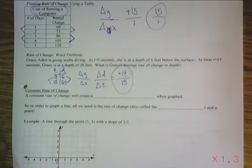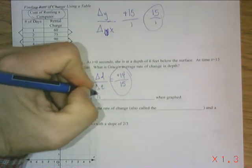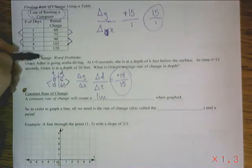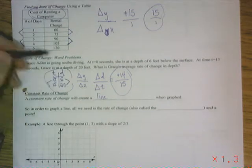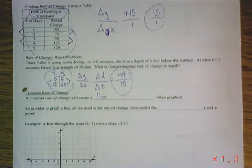Last one on this. A constant rate of change will create a line when it's graphed. So if we were to graph these points right here, and if we were to graph these points up here about the cost of renting a computer, we would find we'd have a linear function.